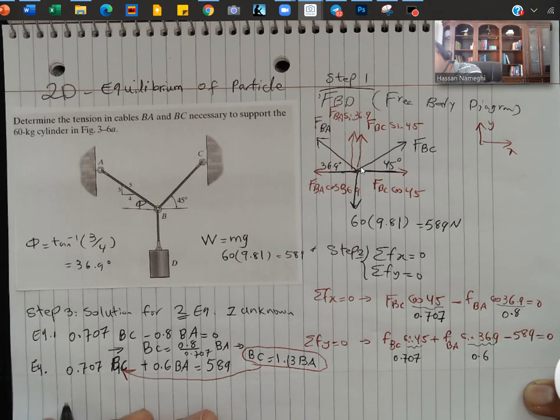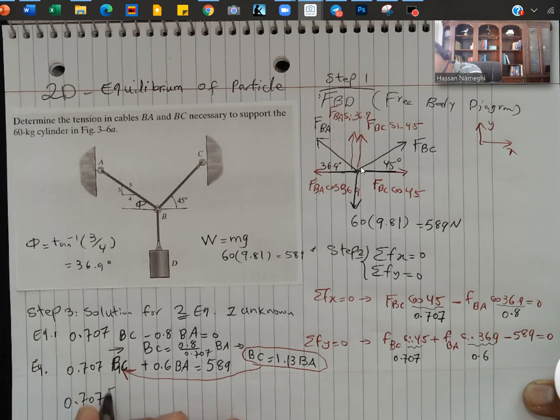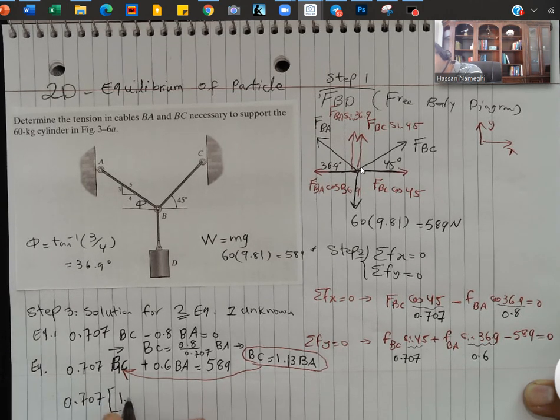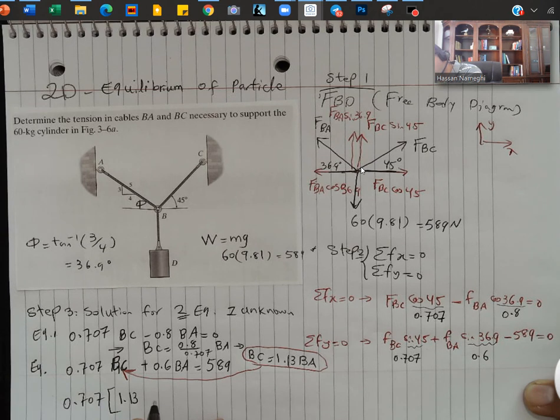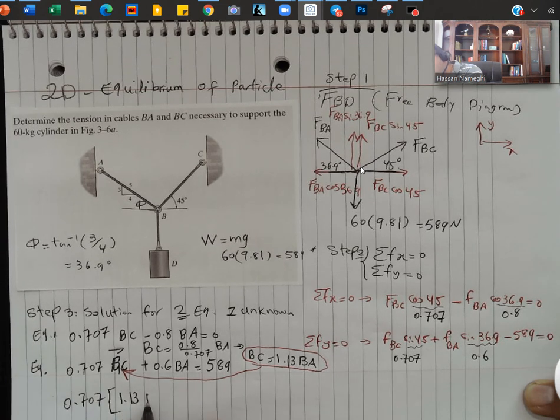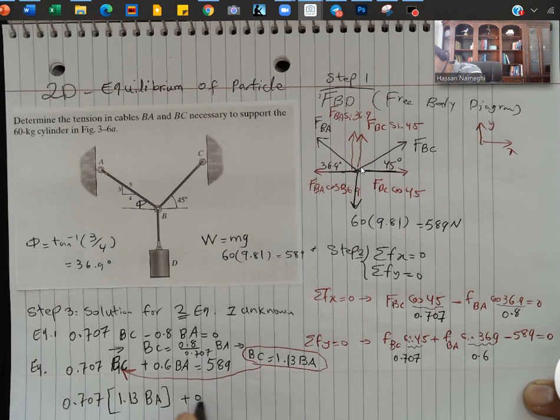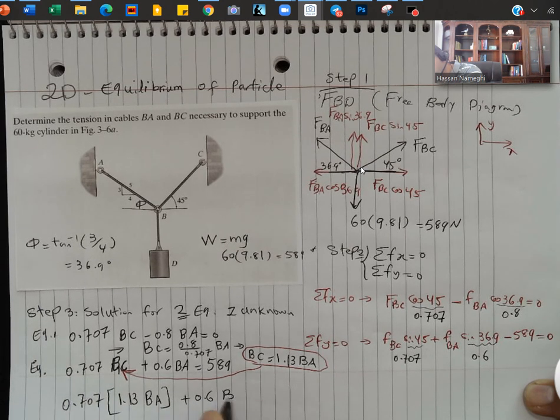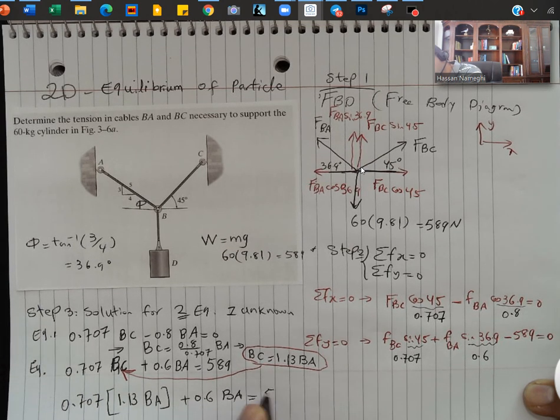So I'm going to get 0.707. Instead of BC, I'm going to put that 1.13 BA. And I already have plus 0.6 BA. This is equal to 589.